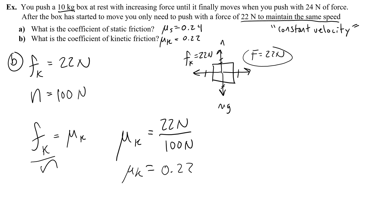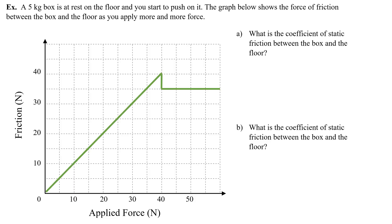You'll notice that 0.22 is slightly smaller than the coefficient of static friction of 0.24 — confirming that mu k is always slightly less than mu s. Let's do one more problem. A 5 kilogram box is at rest on the floor and you start to push on it. The graph below shows the force of friction between the box and the floor as you apply more and more force. Find: A) the coefficient of static friction, and B) the coefficient of kinetic friction between the box and the floor.